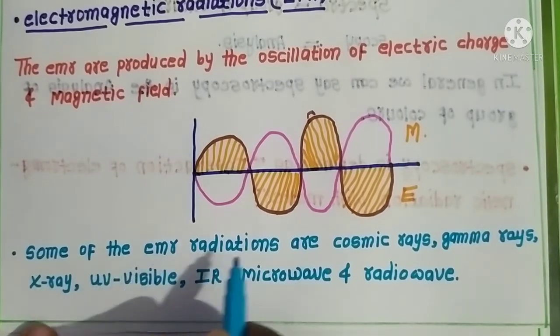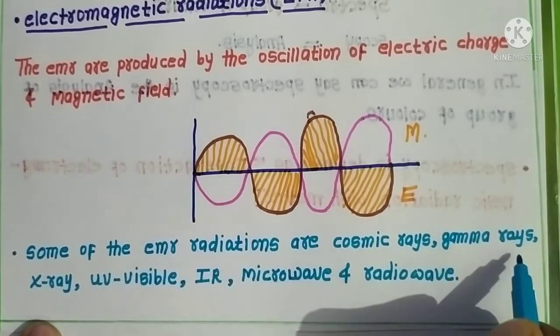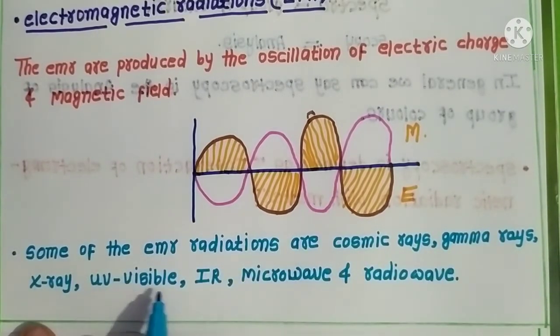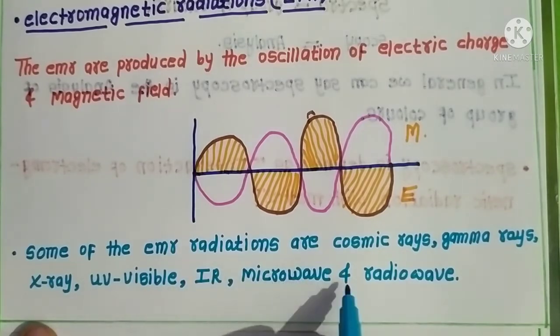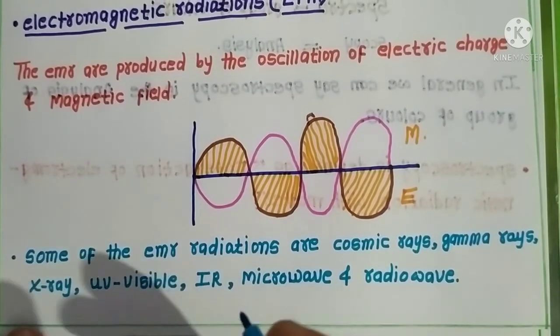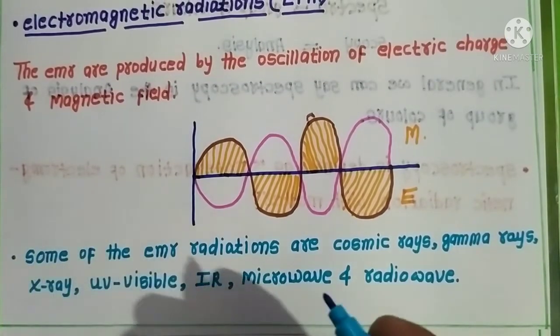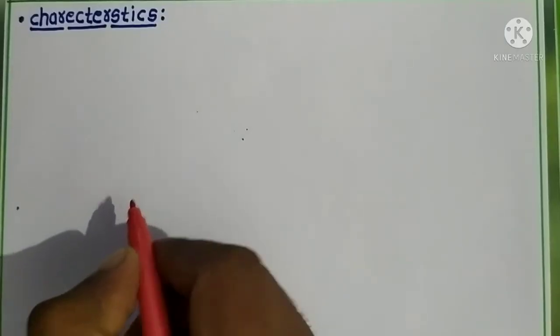Some examples of electromagnetic radiation are cosmic rays, gamma rays, X-rays, UV-visible radiation, infrared, microwave, and radio waves. The first characteristic of electromagnetic radiation is that they are produced by the oscillation of electric charge and magnetic field, and these two fields are mutually perpendicular to each other and co-planar.